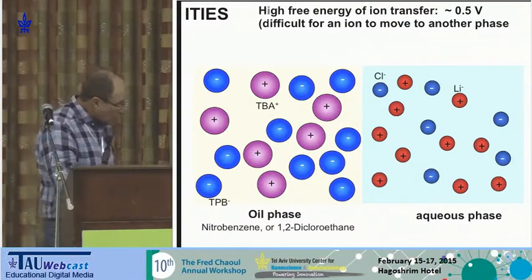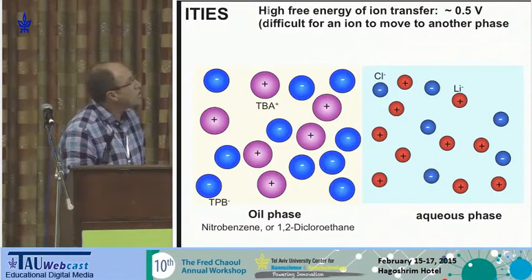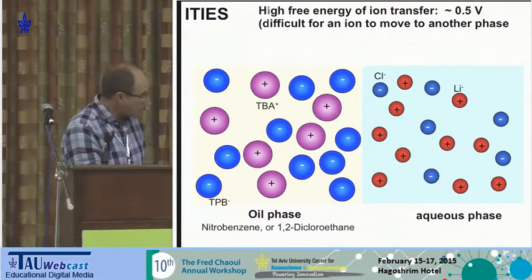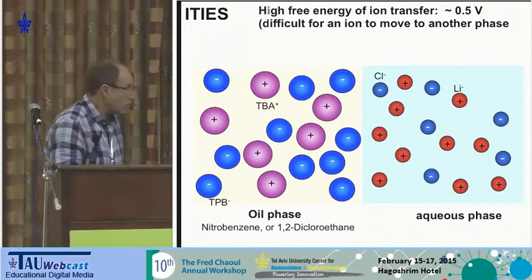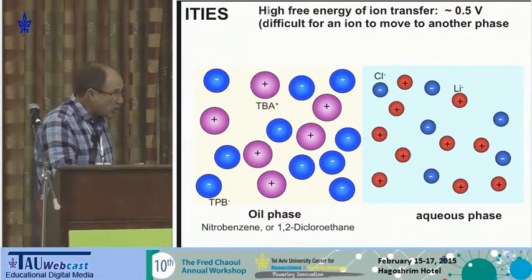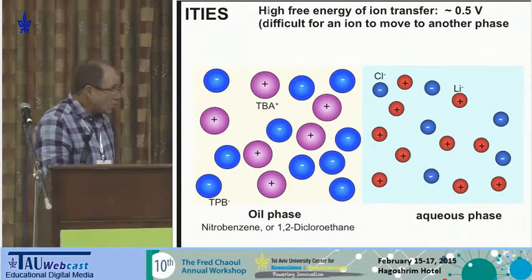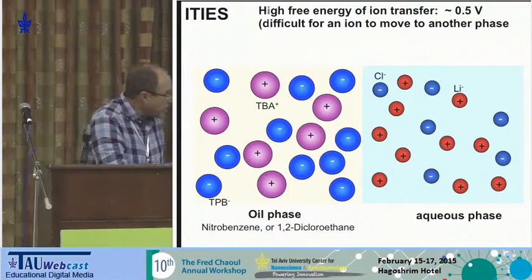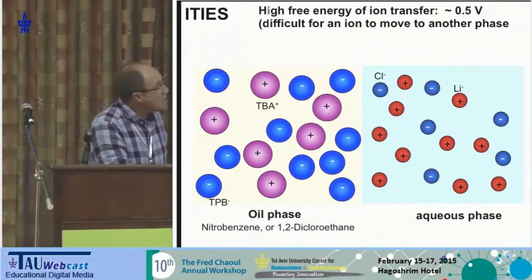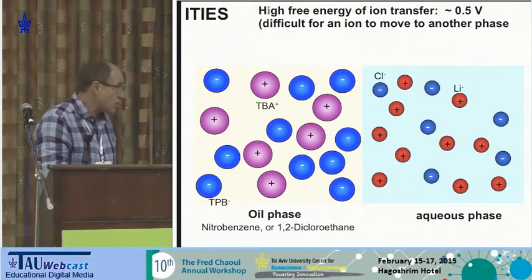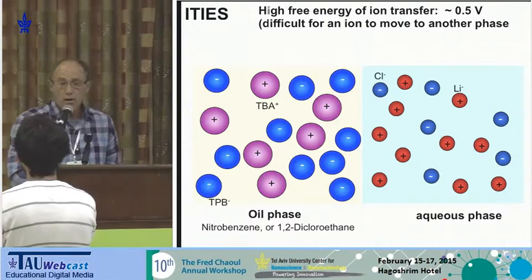What is this? On one side you have water with ions localized in this water. On the other side you have oil with ions localized in this phase. Ions cannot transfer across this interface because energetically, large ions like to stay in the oil phase, and small ions energetically like to stay in the water phase.